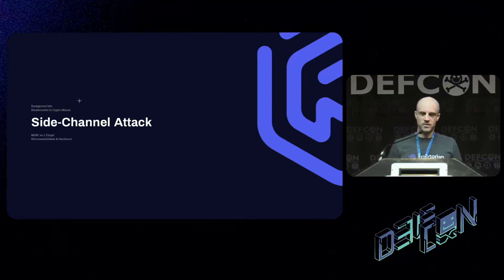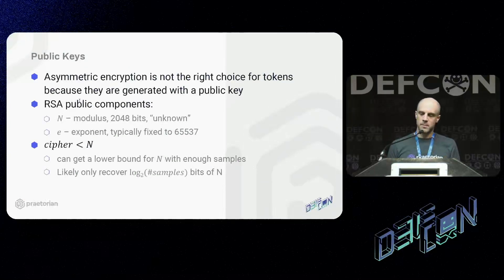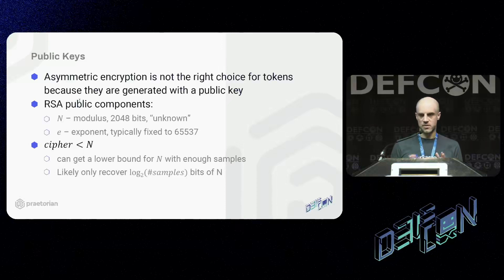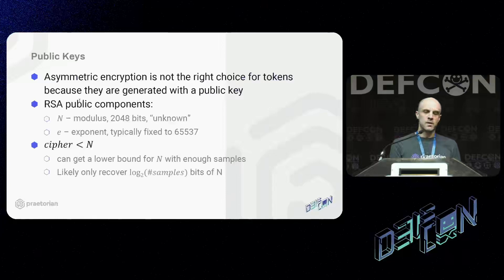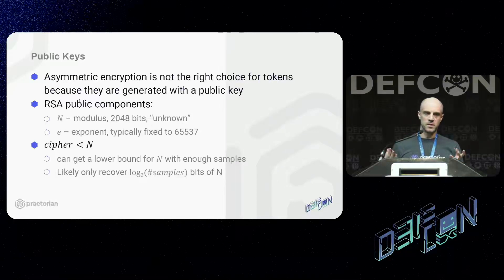If that was the end of the story, I probably wouldn't be here talking at DEF CON. But there is a part two: a side channel attack. The objective is to recover the public key — we have all the other pieces of this attack chain, we just need the public key. For RSA, the public components are N — a modulus of 2048 bits — and E, your exponent. For all intents and purposes, 99% of RSA implementations have a fixed E value, so we'll say that's known. The modulus is what we want to figure out and recover. We also know that any ciphertext is necessarily going to be less than N based on the math involved in RSA, giving us a rough lower bound for N.